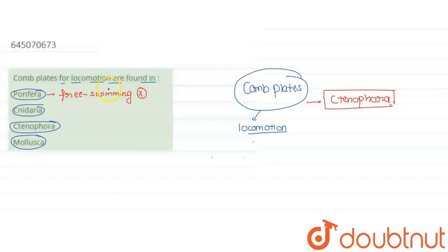Second option is Cnidaria. Although Cnidaria contain tentacle-like organs which help in locomotion, this is not our answer.